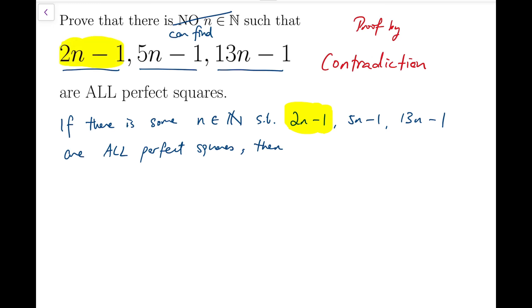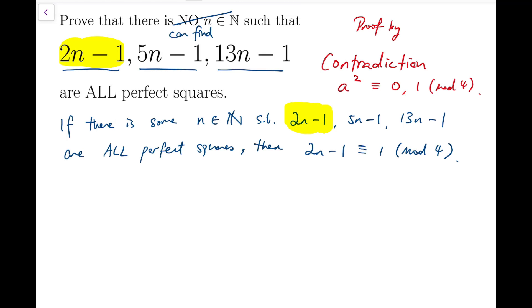then in particular 2n-1 must be a perfect square, and this number is odd. So that means 2n-1 must be congruent to 1 mod 4. Recalling that any perfect square, say a², when divided by 4, the remainder must be either 0 or 1. If a is even, then a² is a multiple of 4. Otherwise, if a is odd, then a² is also odd, but if divided by 4, the remainder can only be 1 — it cannot be 3. So these are the only two possible cases.